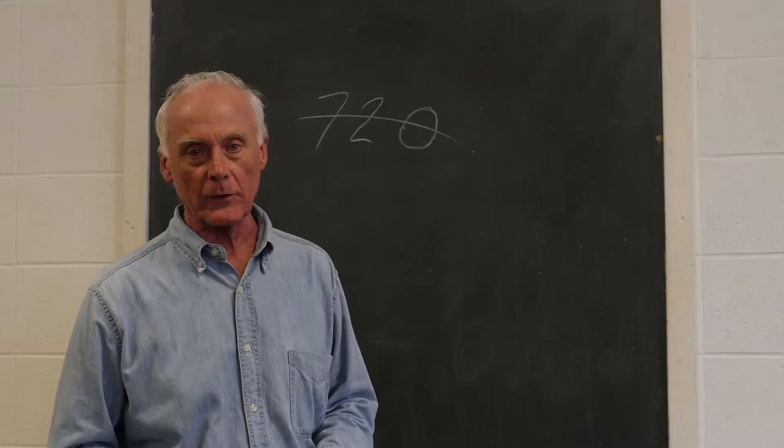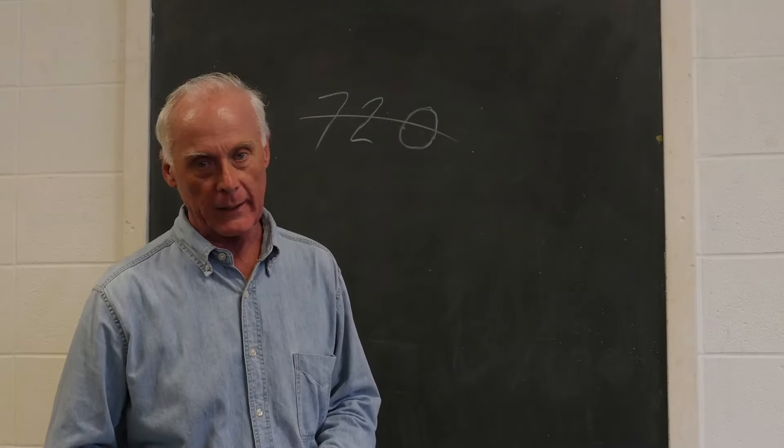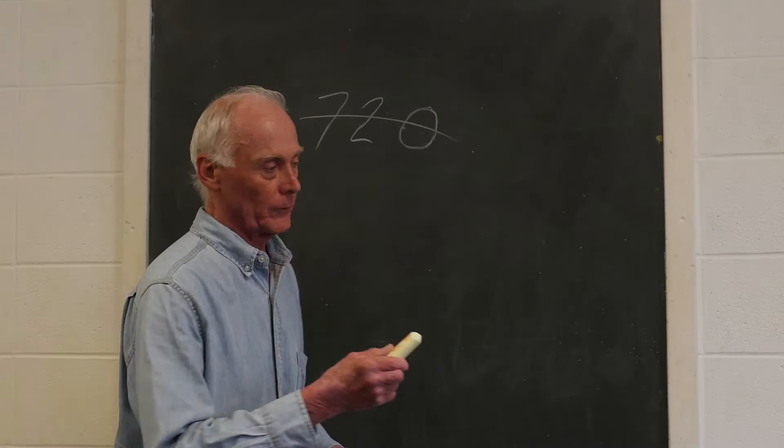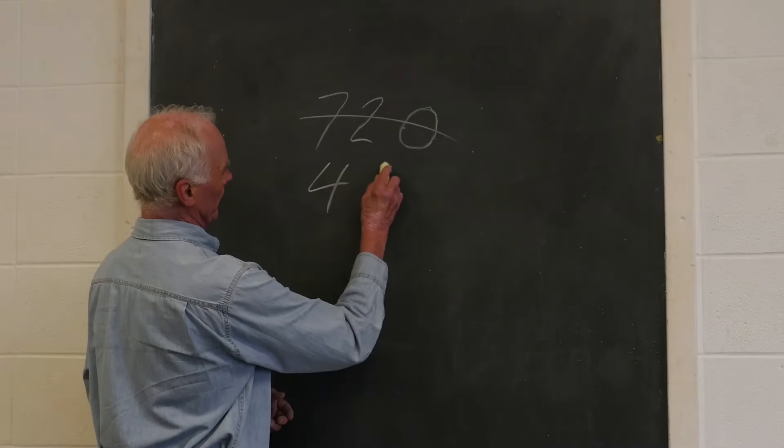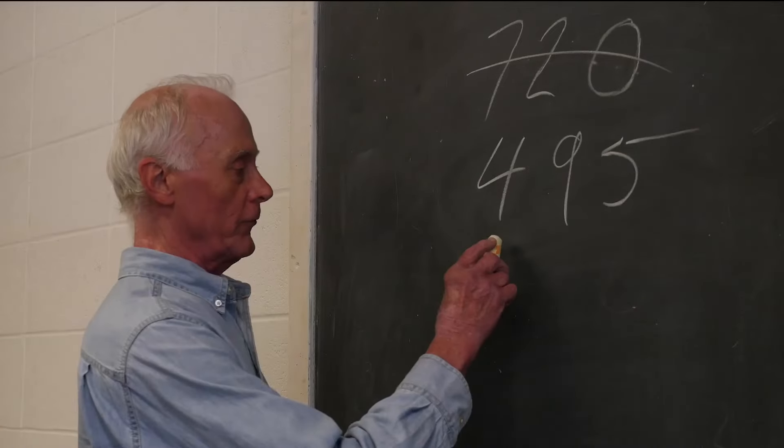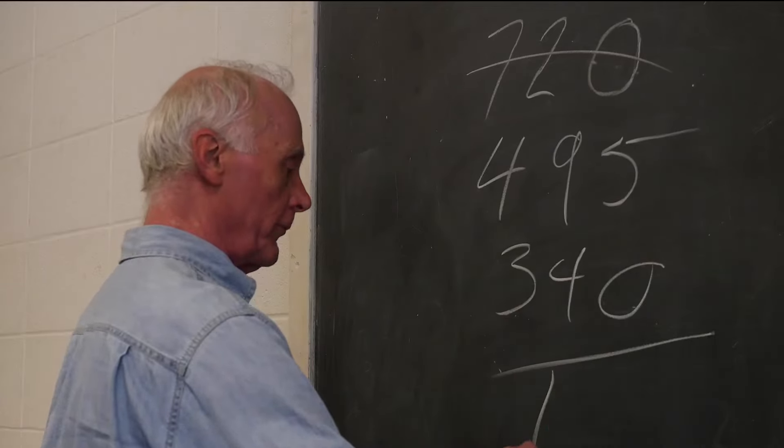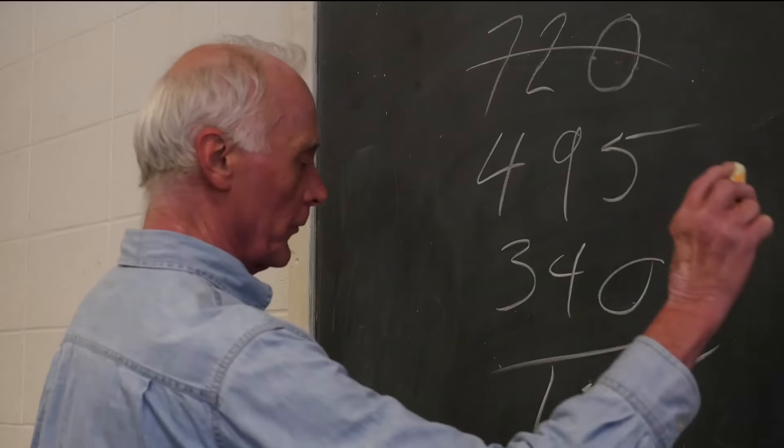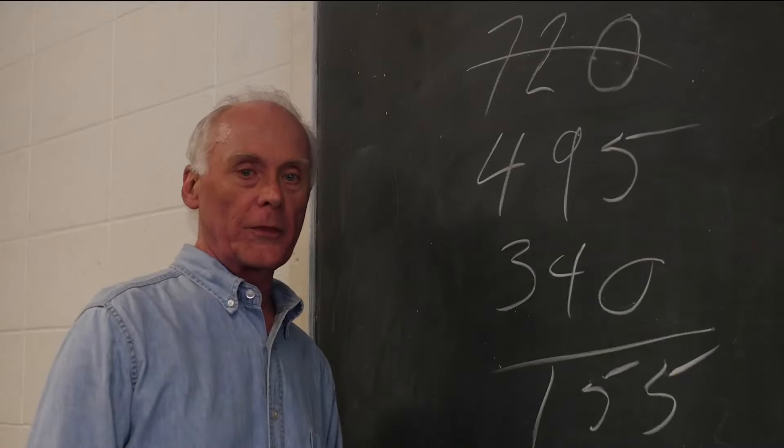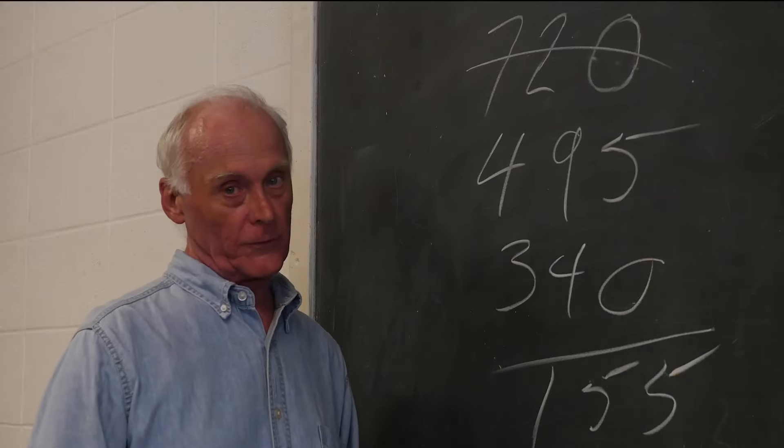If you're earning $50,000 a year, congratulations by the way. That $720 is now worth $495, less the cancelled child tax credit of $340, and you're left with $155 or $13 a month. Try finding good child care for $13 a month.